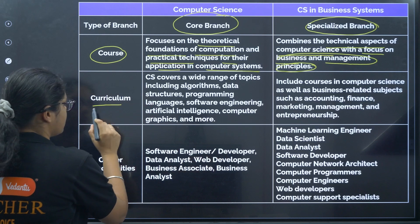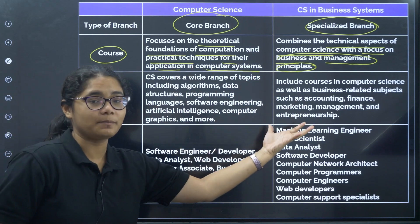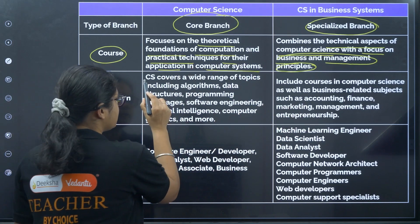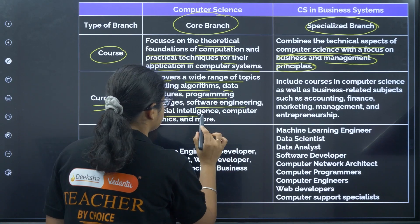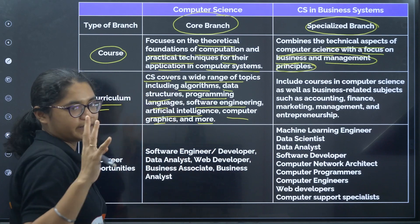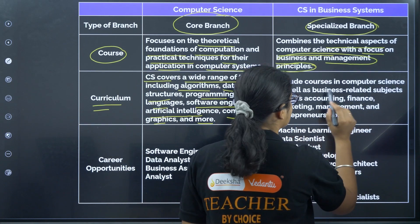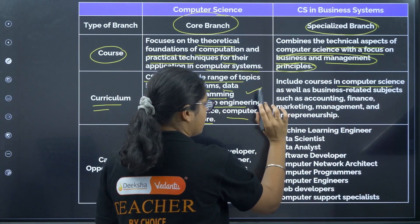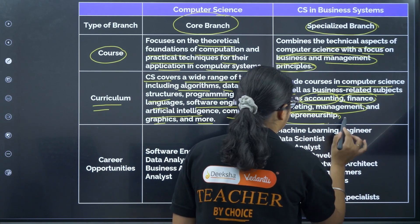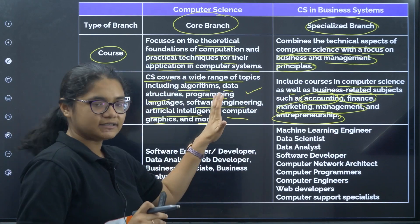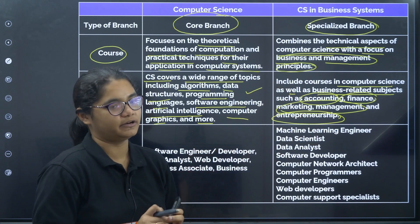Regarding curriculum, computer science covers a wide range of topics including algorithms, data structures, programming languages, software engineering, artificial intelligence, computer graphics and more. Business system includes all those computer science courses plus business-related subjects such as accounting, finance, marketing, management and entrepreneurship.